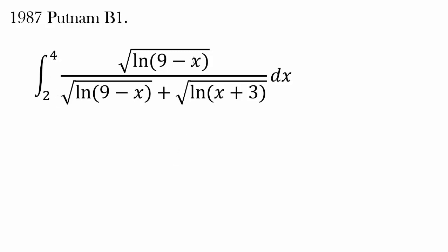We have the integral from 2 to 4 of a complex expression: square root of natural log of (9 minus x), and we have two of them — another square root of natural log of (9 minus x), plus square root of natural log of (x plus 3), dx. So what substitution do we make?